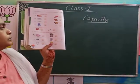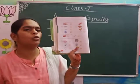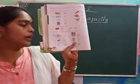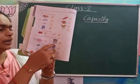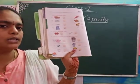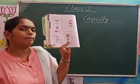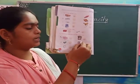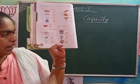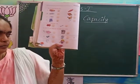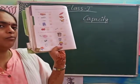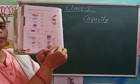And next, tick the ones that can hold more water. Kettle or bucket? Bucket can hold more water — tick on the bucket. Cup or jug? Jug can hold more water — tick on the jug. Glass or bottle? Bottle can hold more water — tick on the bottle.